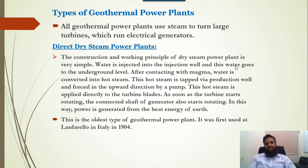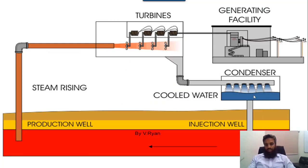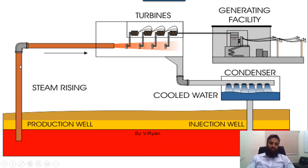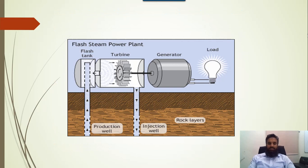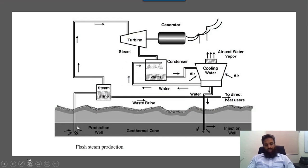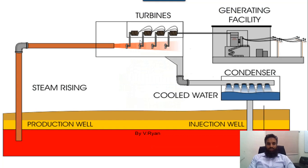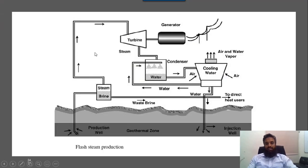There are multiple types of geothermal plants. The first is the direct steam power plant: water flows from the injection well to the geothermal region, steam travels from the geothermal region to the production side, and then the turbine rotates, driving the generator to produce electricity fed to the grid. The second type is the flash or double flash steam plant. In this design, there is an injection well and a production well; from the production well a flash tank stores the steam before it goes directly to the turbine, unlike the dry steam type where steam goes directly to the turbine.